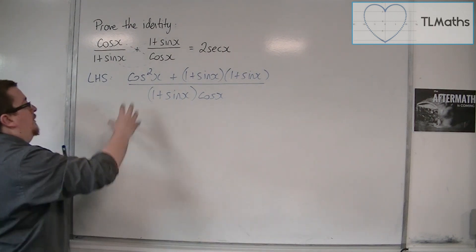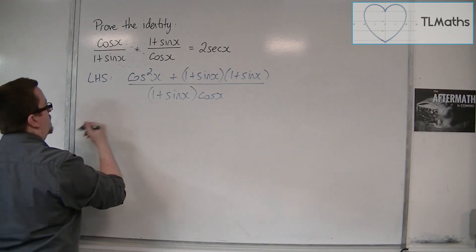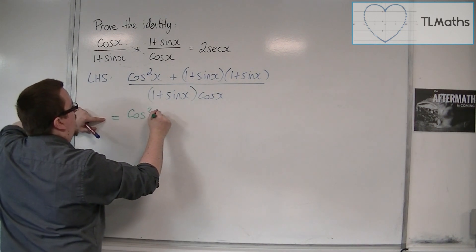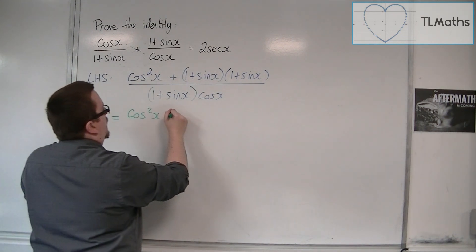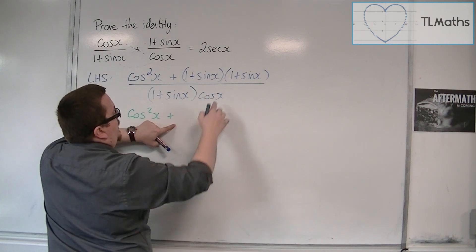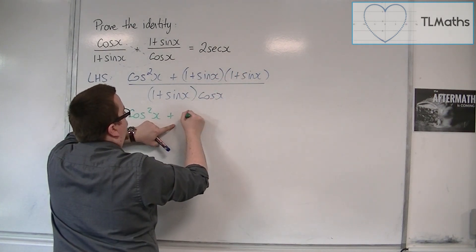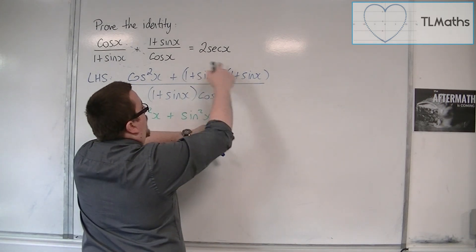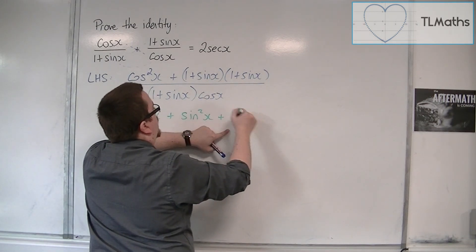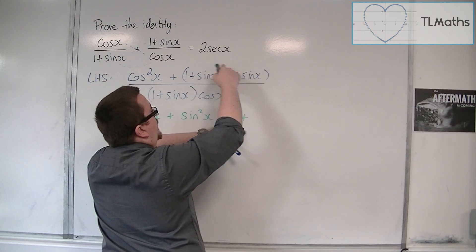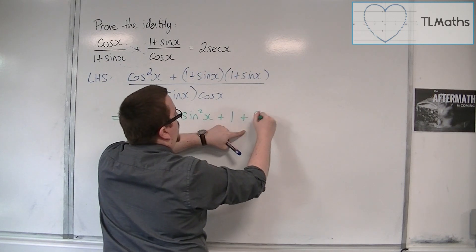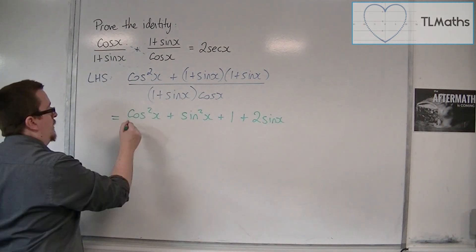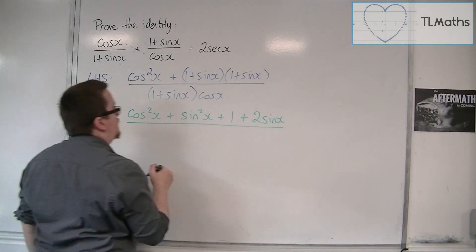And now let's simplify this. So we have cos squared, that can remain the same. Expanding these double brackets, we're going to get sin squared plus 1 times 1, so 1, plus 1 times sin x and sin x times 1, so 2 sin x.